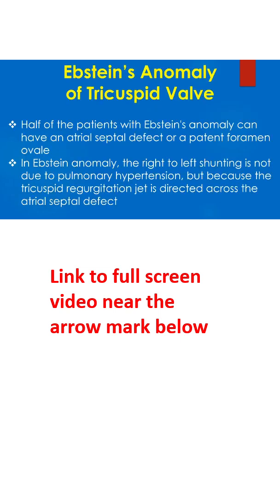About half of the patients with Ebstein's anomaly can have an atrial septal defect or patent foramen ovale. In Ebstein's anomaly, the right-to-left shunting is not due to pulmonary hypertension but because the tricuspid regurgitation jet is directed across the atrial septal defect.